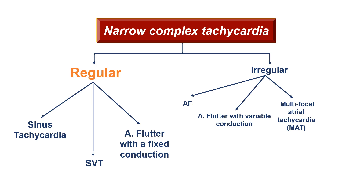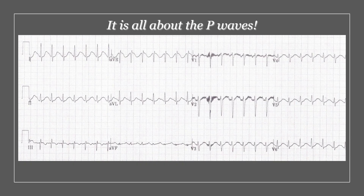To differentiate the three conditions, it's all about the P waves. If you can see one P wave before each complex, it's sinus tachycardia. If you see more than one P wave before each complex, it's atrial flutter. If you see no P waves at all, or distorted inverted P waves just before or after the complex, it's SVT.